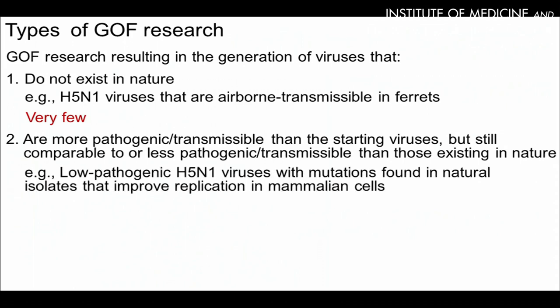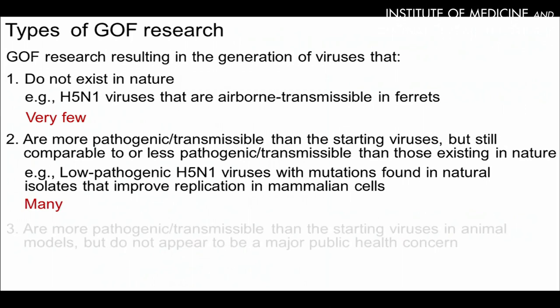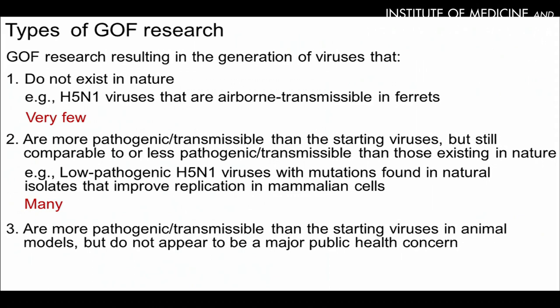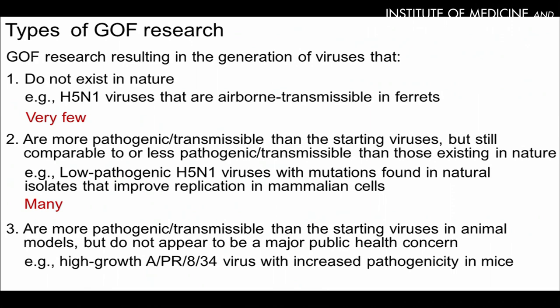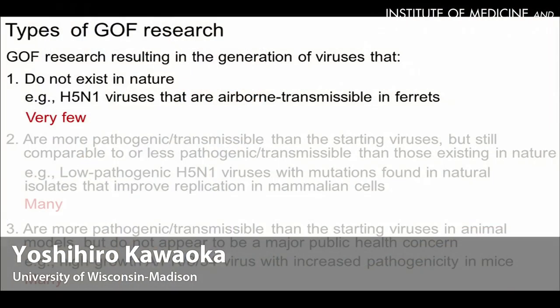The second type of gain-of-function research is the generation of viruses that are more pathogenic and/or transmissible than the starting viruses, but still comparable to or less pathogenic than those existing in nature. There are many such experiments. An example is low pathogenic H5N1 viruses with mutations found in natural isolates that improve replication in mammalian cells.